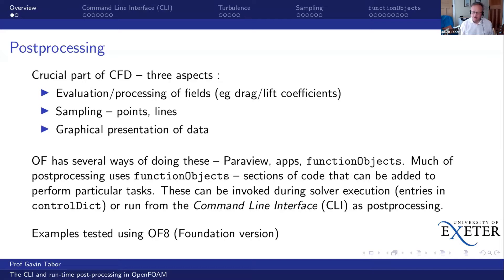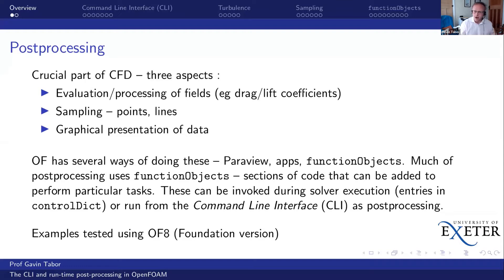OpenFOAM typically provides several different ways of doing things, and one of the main areas of post-processing is ParaView. ParaFoam is the version distributed with the code, and you can do a lot with it — graphical presentation but also a certain amount of sampling. The other main approach is function objects: small pieces of code which can be added to your main solver application in order to extend its functionality, typically providing an element of this post-processing.